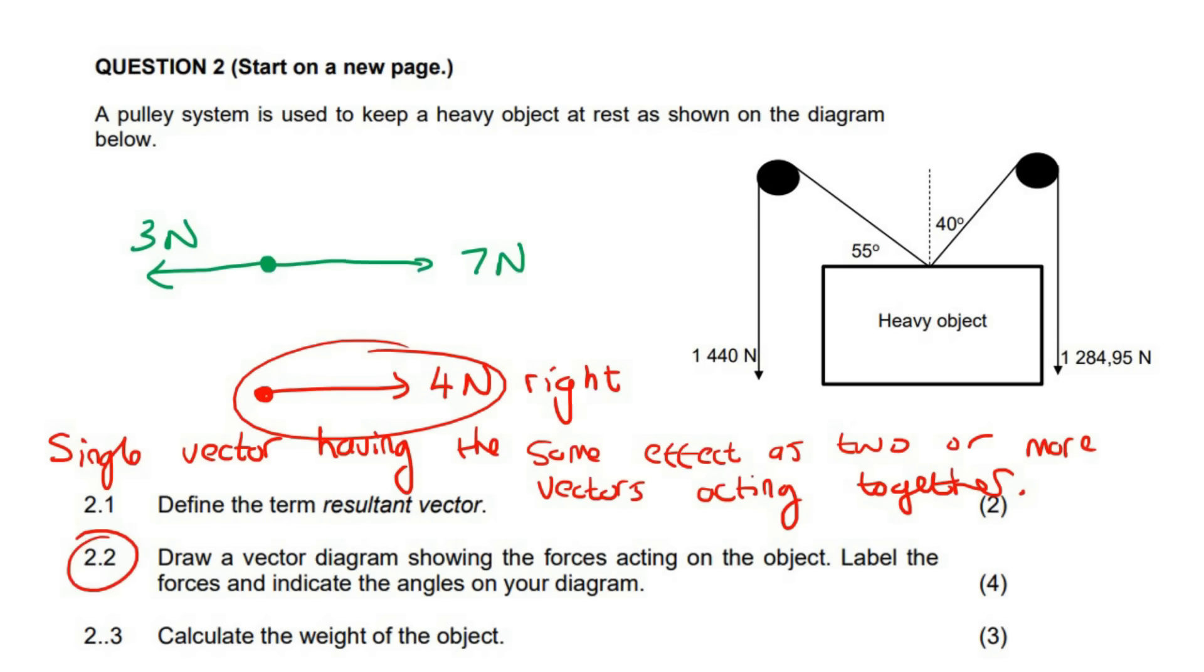Now this one says draw a vector diagram showing the forces acting on the object. Label the forces and indicate the angles on your diagram. Now what is a vector diagram? Some learners confuse this with a free body diagram. So a free body diagram is when you just have a single dot and then you've got the arrows going off like that. But a vector diagram is almost like head to tail. You don't have to use like a compass and a protractor, but it looks the same. Let's first do a free body diagram and then we'll do a vector diagram over here so you can see the difference.